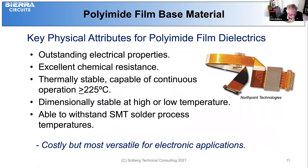Polyamide film is probably the most common for flex circuits. It's a very rugged material with outstanding electrical properties, excellent chemical resistance, thermal stability, capability of continuous operations above 225 degrees C, dimensionally stable at high and low temperature, able to withstand SMT solder process temperatures, costly but the most versatile for electronic packaging. Polyamide does absorb moisture more rapidly than epoxy-based materials; however, it also expels moisture easily, which is something to be aware of for some products where operation with moisture might affect stability.